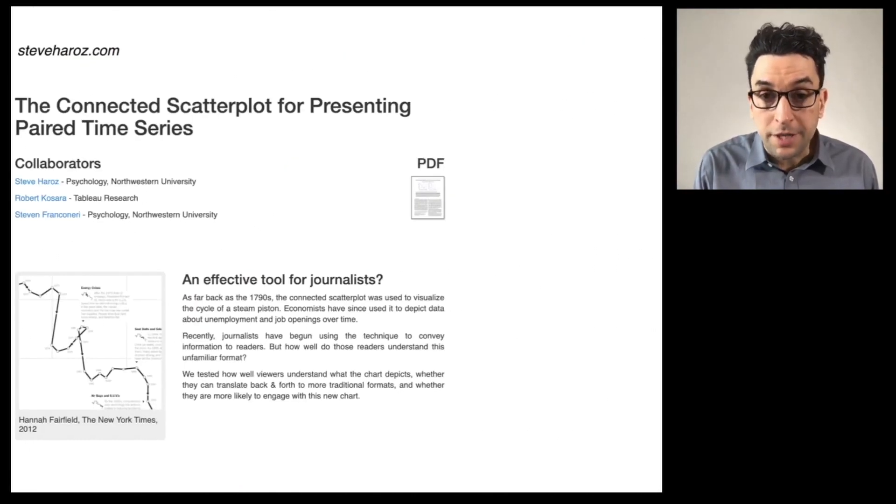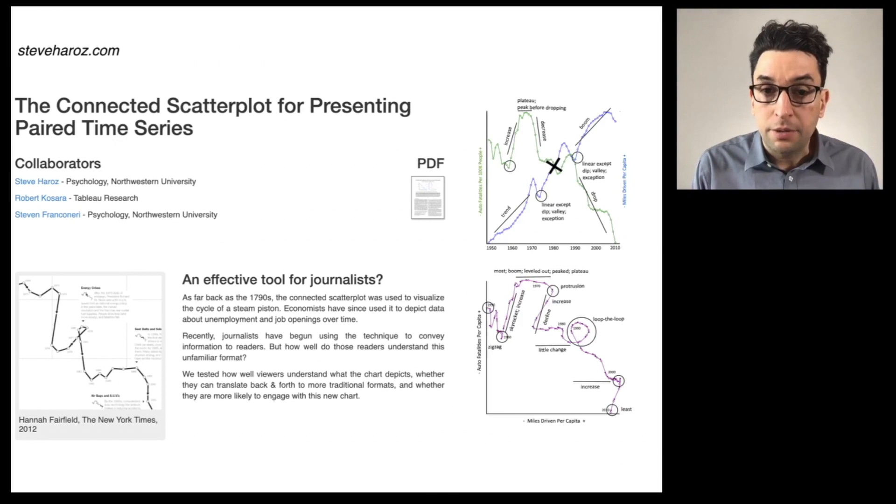If you're interested in connected scatter plots, we've done a study on this in the lab, collaborating with Steve Haroz and Robert Kosara. If you go to the website on the top, you can download a paper where we show people exactly the same data, either in line graphs, that's the top right example, or the same data in a connected scatter plot, that's the bottom right example, and look at the different kinds of patterns that you can pull from each one and the different kinds of patterns that you tend to pull from each one. Different kinds of features pop out in each of these cases.